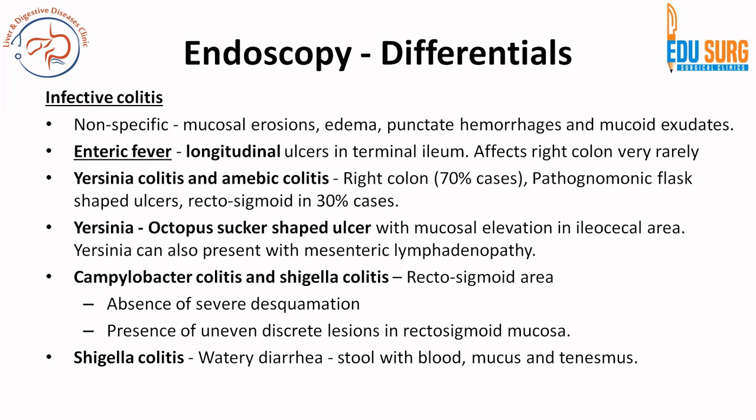For infective colitis, features vary based on the specific infection. Non-specific features include mucosal erosions, edema, punctate hemorrhages, and mucoid exudates — these are non-specific findings. For specific infections: enteric fever usually results in longitudinal ulcers in the terminal ileum, and the right colon is very rarely involved.